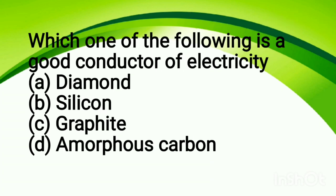Next question: which one of the following is a good conductor of electricity? Option A, diamond; option B, silicon; option C, graphite; option D, amorphous carbon. The correct answer is option C, graphite.